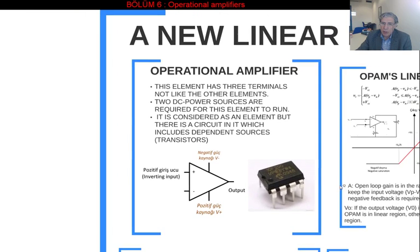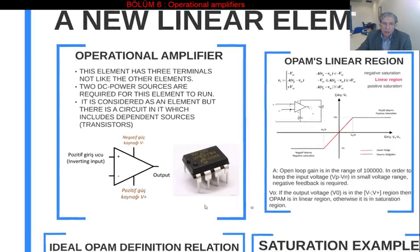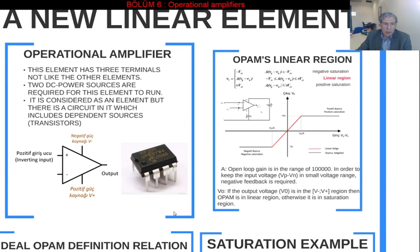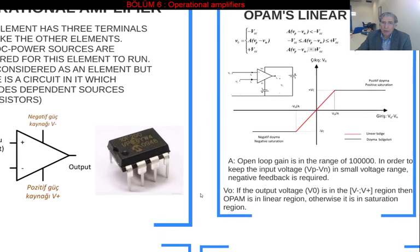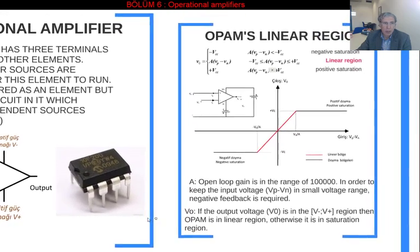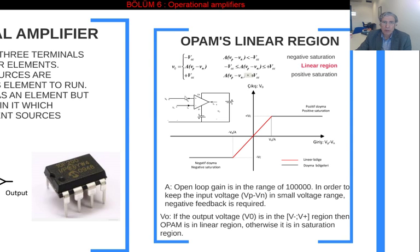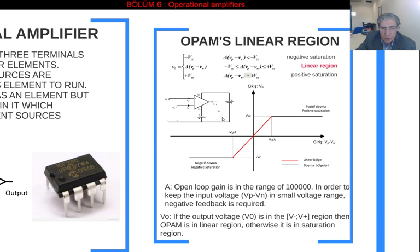Let's come to the next step: how we are going to model this component. That is the behavior of this element — the element available in the market. The inputs are Vp and Vn, and Ip and In are the terminal currents. Vp and Vn are node voltages — that means the voltage between each terminal and ground. Vn is also this terminal's node voltage, and the output V0 is the node voltage of the output node.